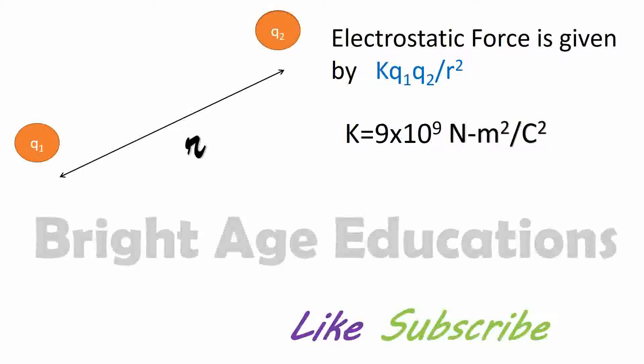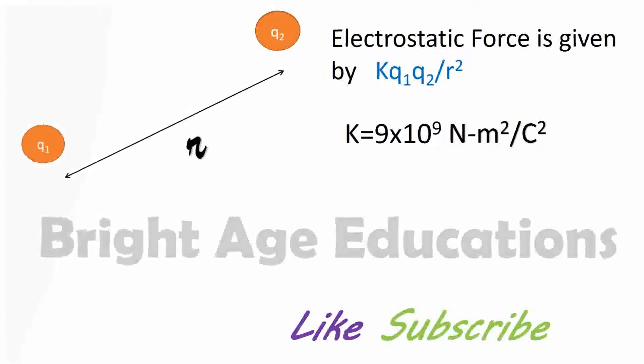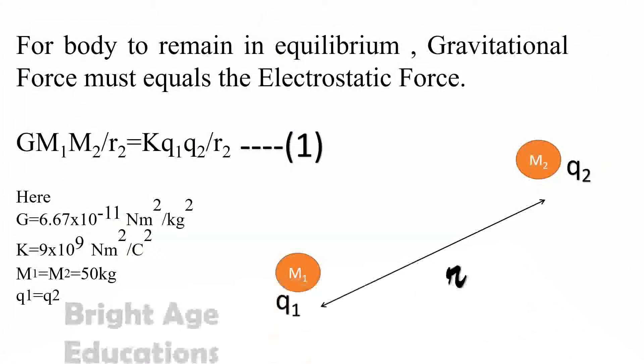Here K equals 9 into 10 to the power 9 Nm square per coulomb square. For body to remain in equilibrium, gravitational force must equal the electrostatic force.